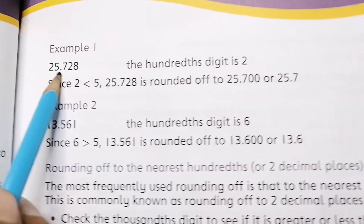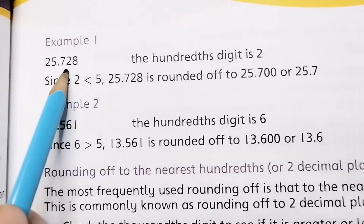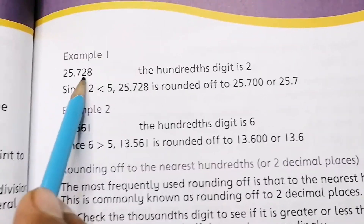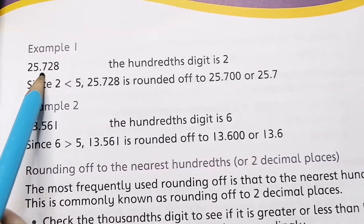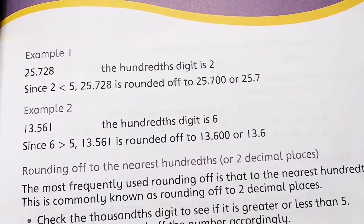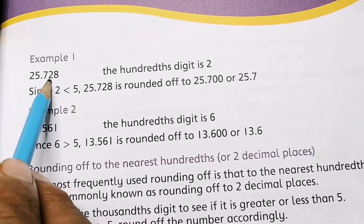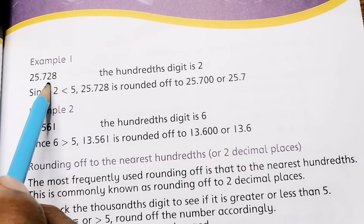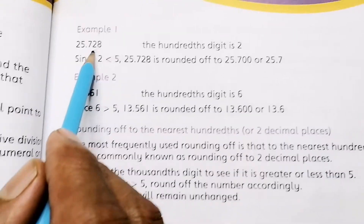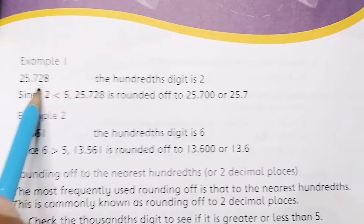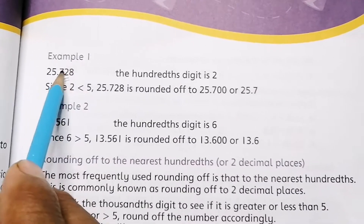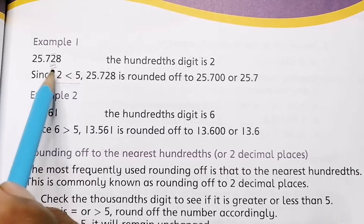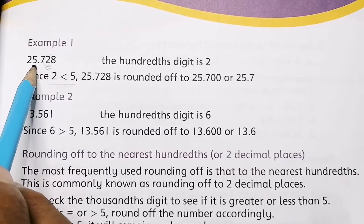For example, 25.728 is given. You have to look at the tenth place, hundredth place, and thousandth place. The digit at the hundredth place is 2. Since 2 is less than 5, there is no change. So you simply write 25.7.